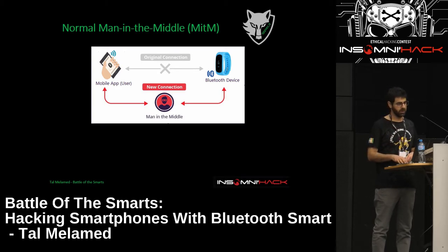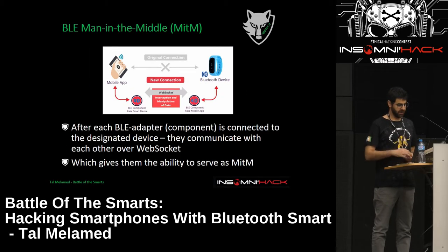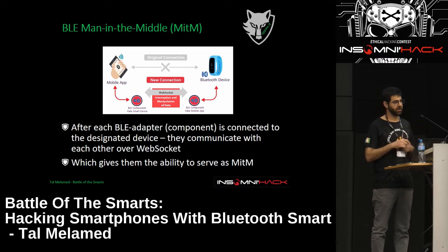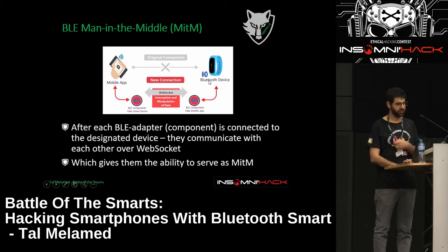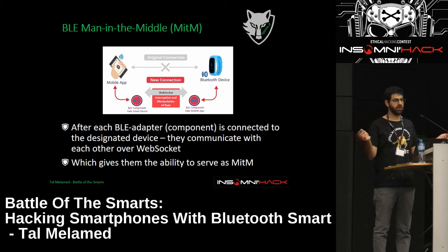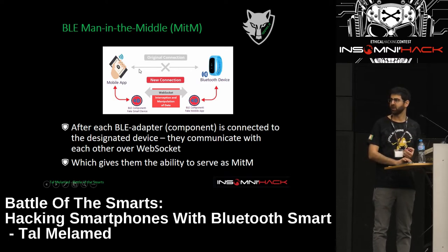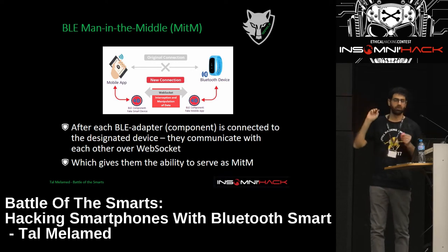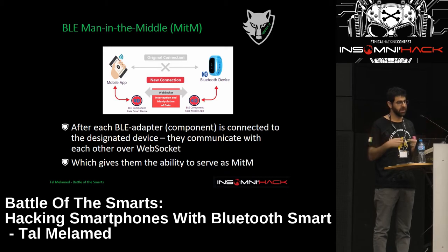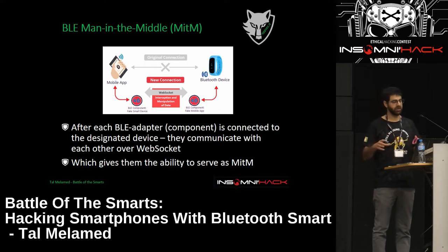What we need to do is have two components — two 'black boxes' — in the middle, going to serve the other side for each other. One Bluetooth device connects to the actual BLE device, serving as the client or mobile app. Another BLE dongle connects to the app, serving as the device. How do they communicate with each other? We use a different protocol — WebSocket. So we use two BLE components connected to the actual BLE devices, and perform the man-in-the-middle over a WebSocket.